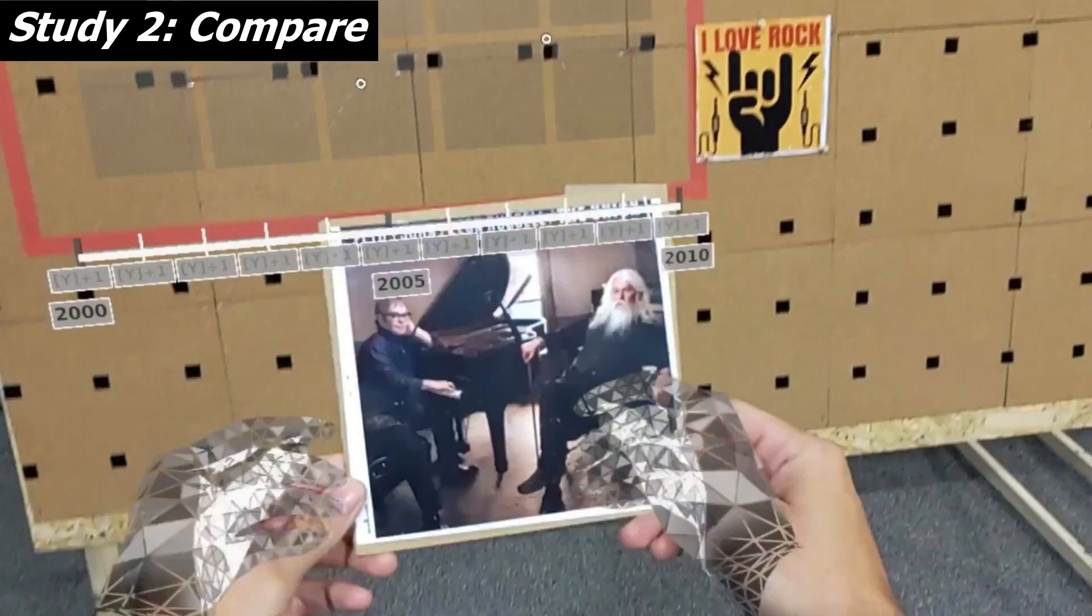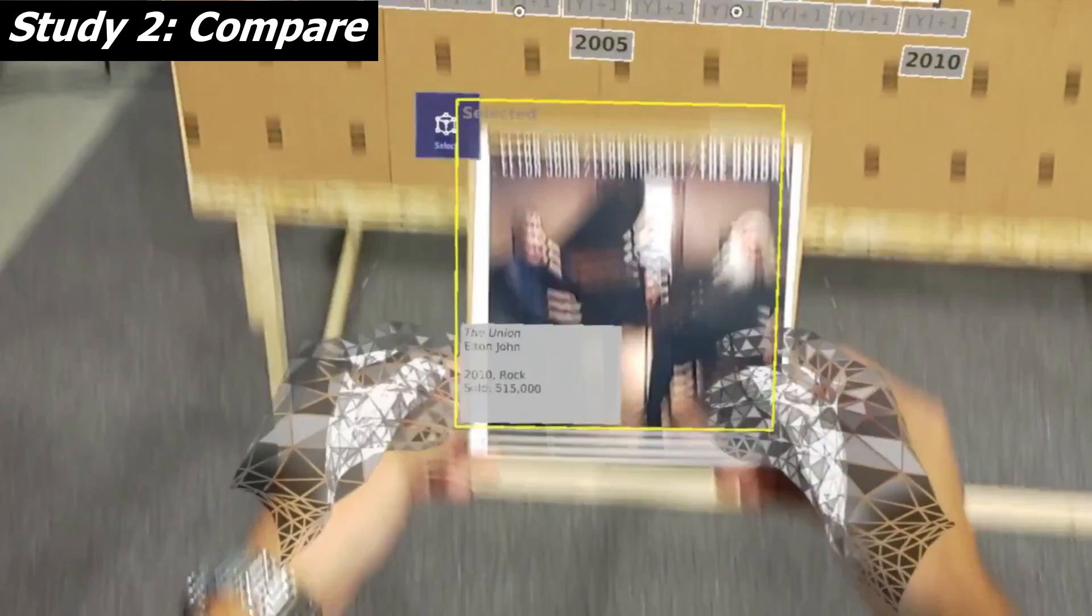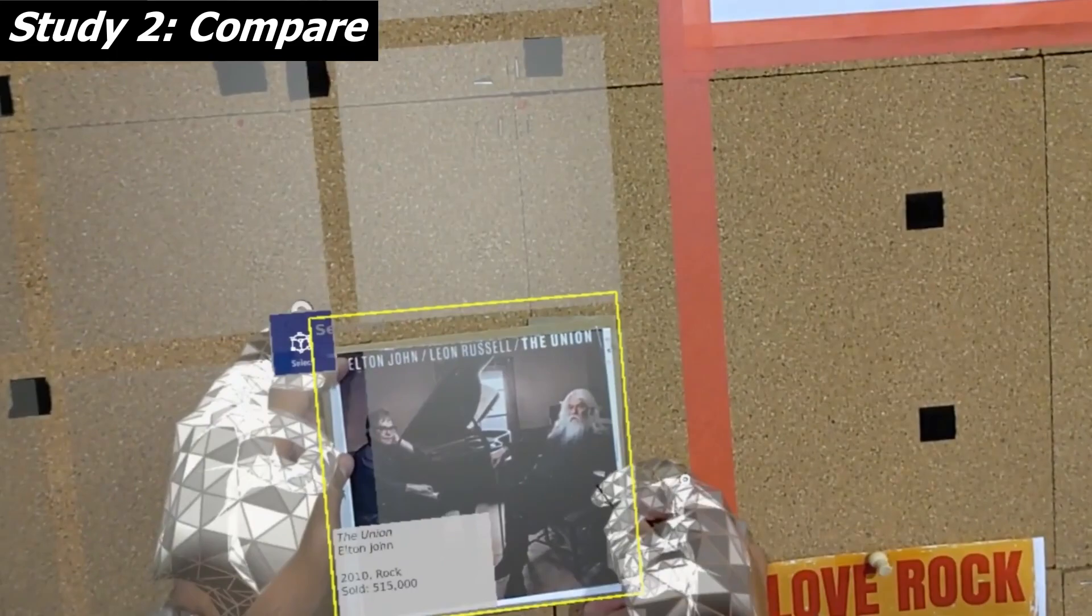In this case, the participant decides to put the Elton John cover onto the rock wall. Once the record is placed, it turns green and the score is updated.